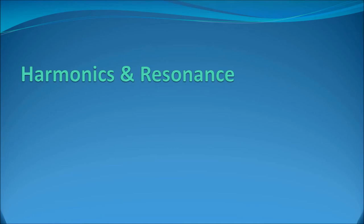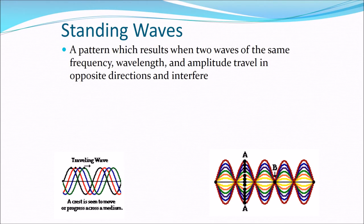Last time we talked about wave properties, wave behaviors, and different parts of the wave. This time we're going to talk about harmonics and resonance. Standing waves are a pattern which results when two waves of the same frequency, wavelength, and amplitude travel in opposite directions in the same medium and interfere with each other. What we wind up seeing looks like a bunch of loops on a string.